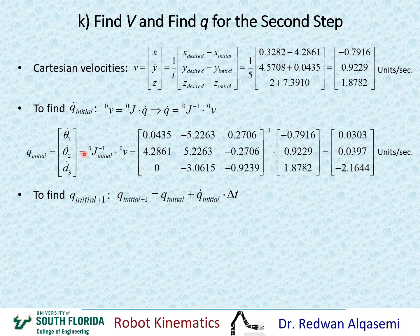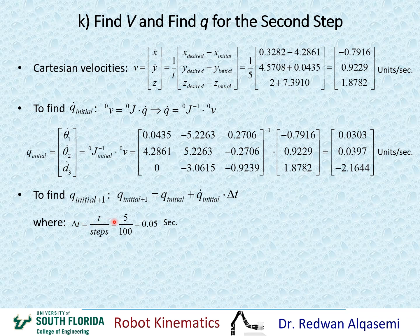Now that we have Q dot initial, we can assemble the equation to find Q for the second step. Q initial plus 1 equals the initial Q values plus Q dot initial times delta T. We already have Q initial from earlier, and Q dot initial from the previous computation. Delta T is found from the total time of five seconds divided by 100 steps, giving delta T equals 0.05 seconds — so each step takes 0.05 seconds, and after 100 steps we reach the desired location.